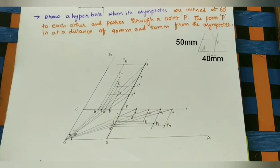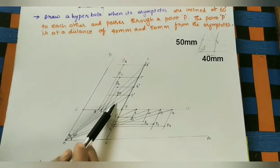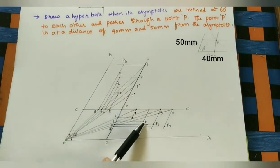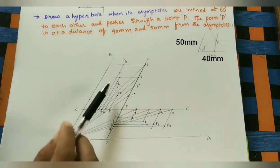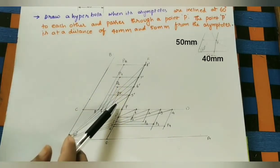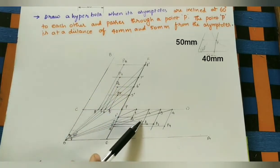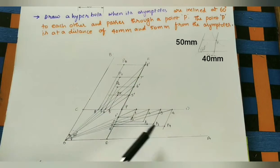After getting all the P points on both sides, join all these P points through P to get the hyperbola.